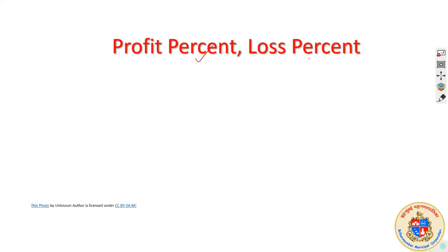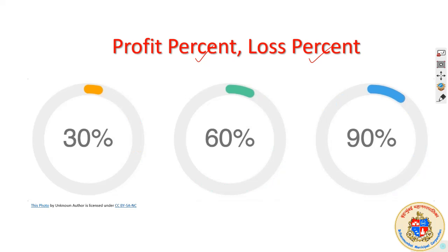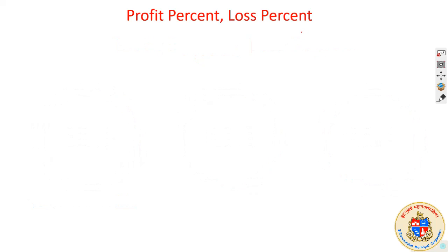We know that if you talk in terms of percentage, it is easy to understand — to ourselves and to others too. Just like we know 30%, 60%, 90% — we easily understand how much in connection with 100%, even the battery percent on our mobile. It is an easy way to understand. So we will try to learn how to express profit and loss in percent. That is the main aspect of this part of the video.